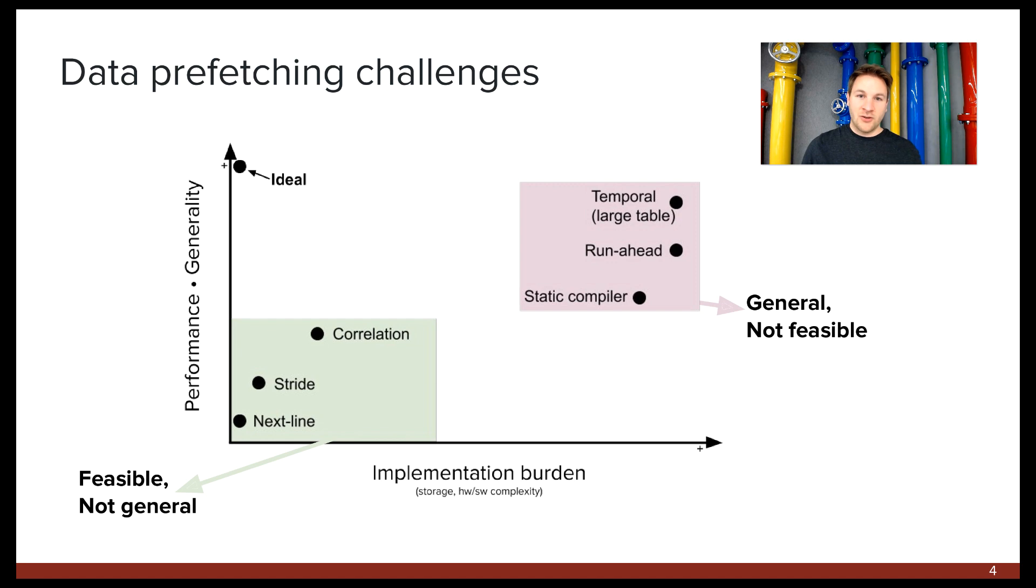Here's another way that we can visualize the landscape of data prefetchers. Here we have several hardware and software-based data prefetcher families, where the x-axis is the implementation burden, or cost, and the y-axis is the product of performance and generality. So an ideal prefetcher would be in the top left, where it's really cheap to build, and it also performs really well for a wide range of memory access patterns. An ideal prefetcher doesn't exist today. On the left, in the green area, we have several simple prefetchers that are able to fetch the next line or detect simple patterns like strides. These are easy enough to build that we find them in most of our devices today, but they're unable to detect and prefetch more complex patterns.